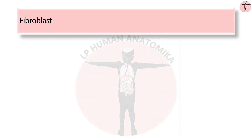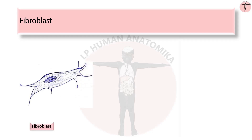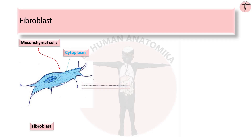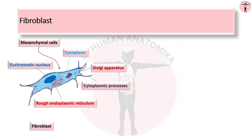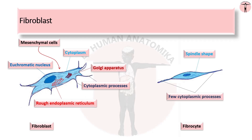Fibroblasts are the most abundant cells in the connective tissue, derived from undifferentiated mesenchymal cells. Young and active fibroblasts have an abundant cytoplasm with branched processes, having an ovoid euchromatic nucleus in the center. The cytoplasm has more rough endoplasmic reticulum and a well-developed Golgi apparatus. Old quiescent or inactive cells are smaller than the active fibroblasts.